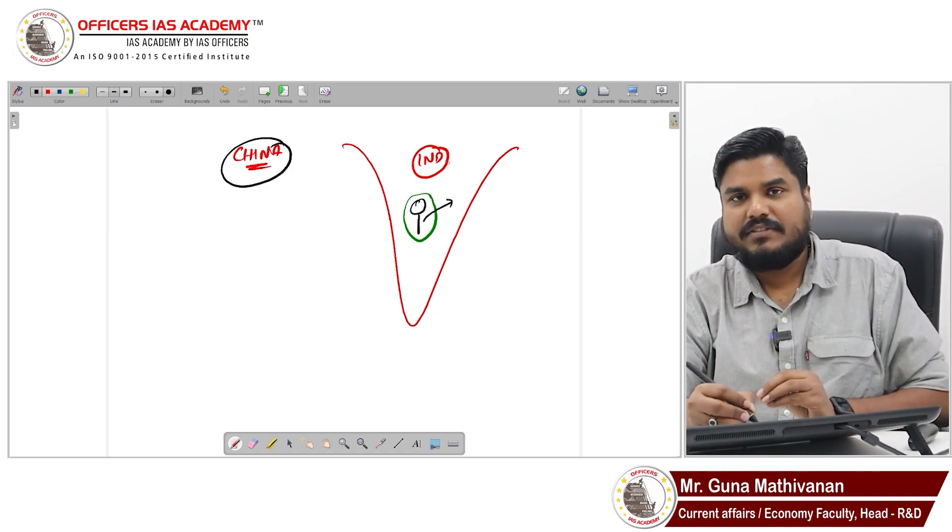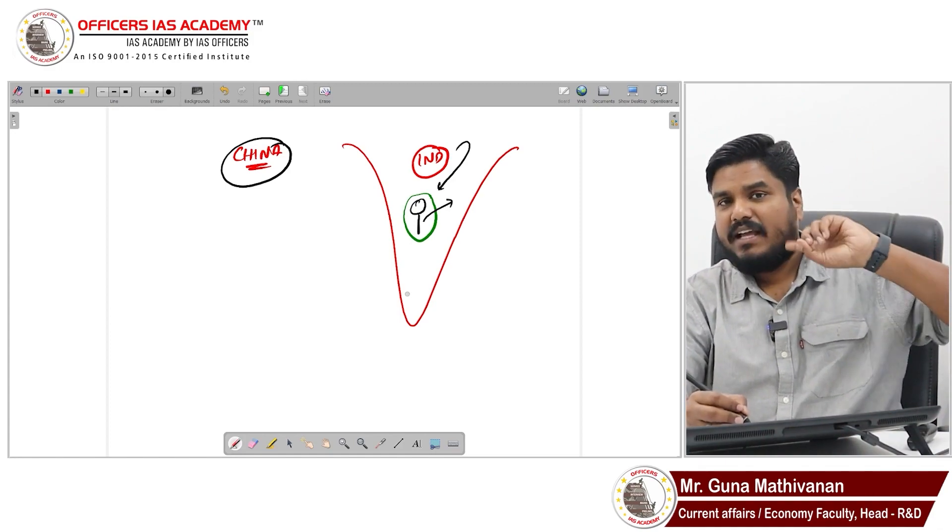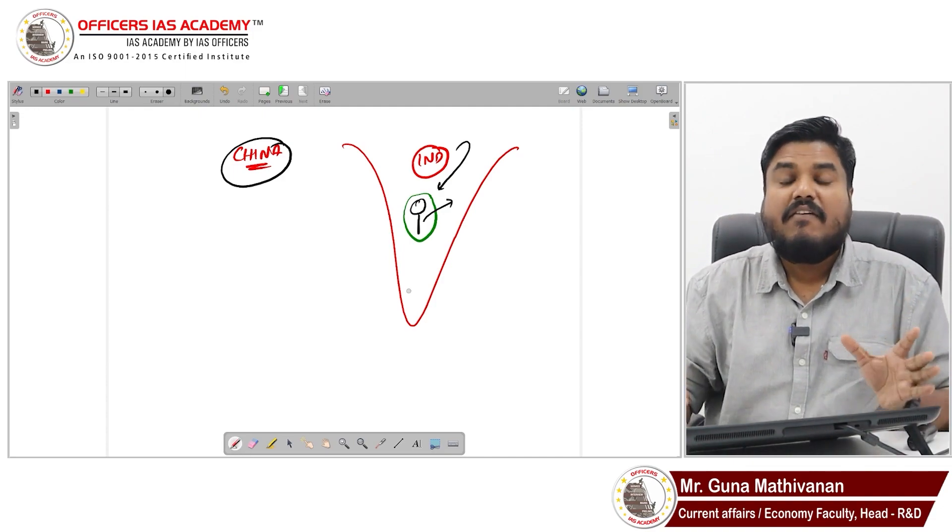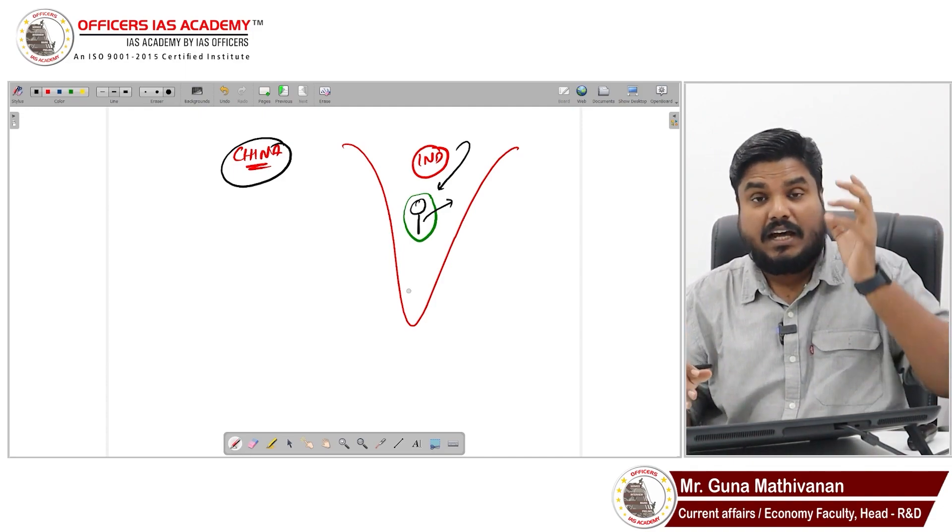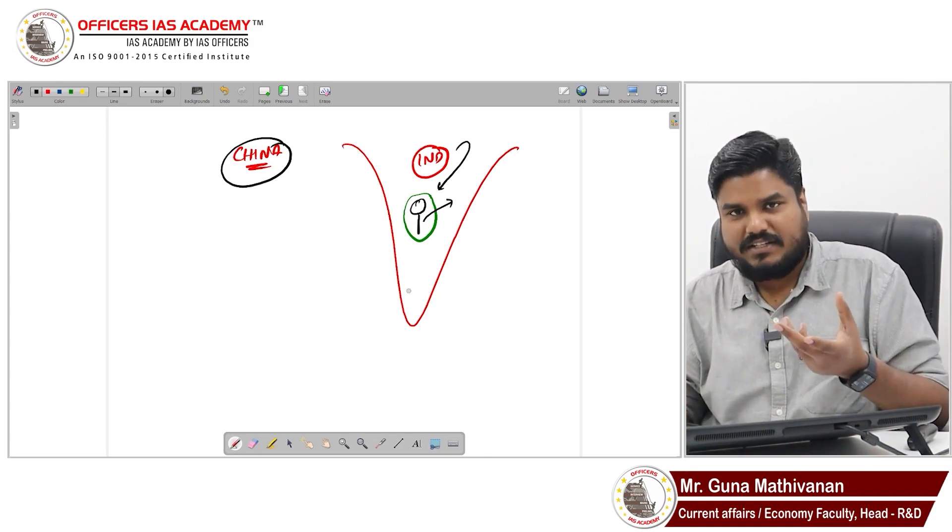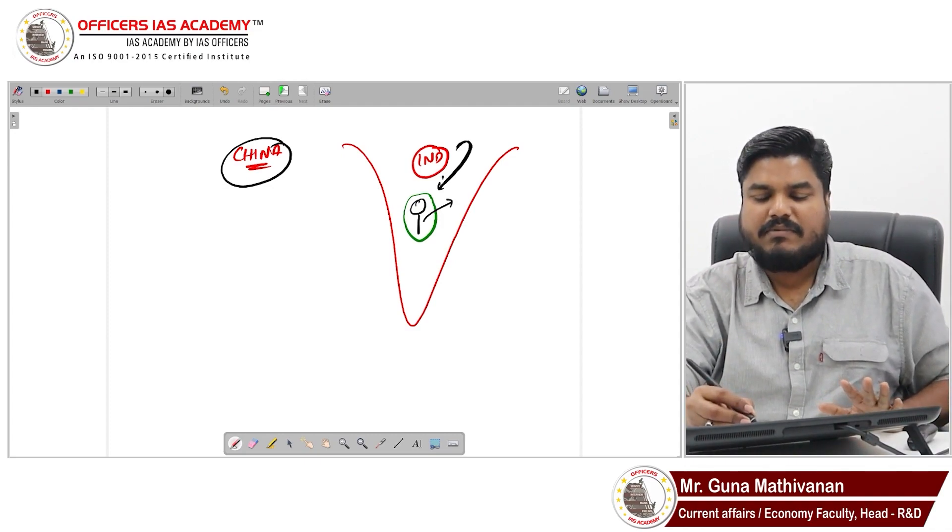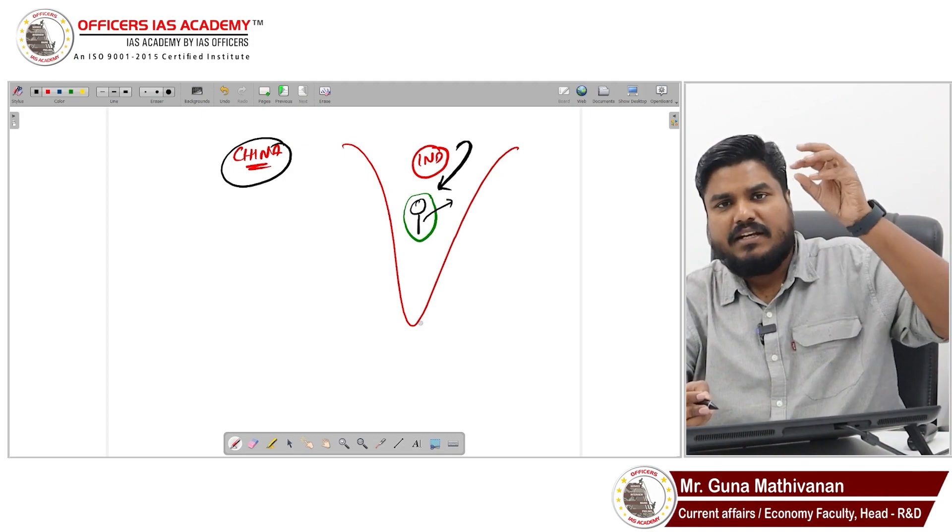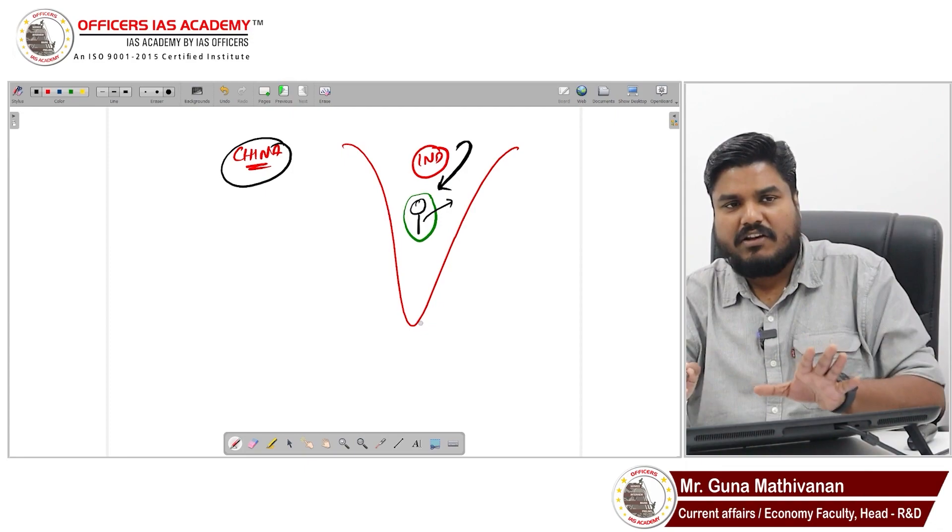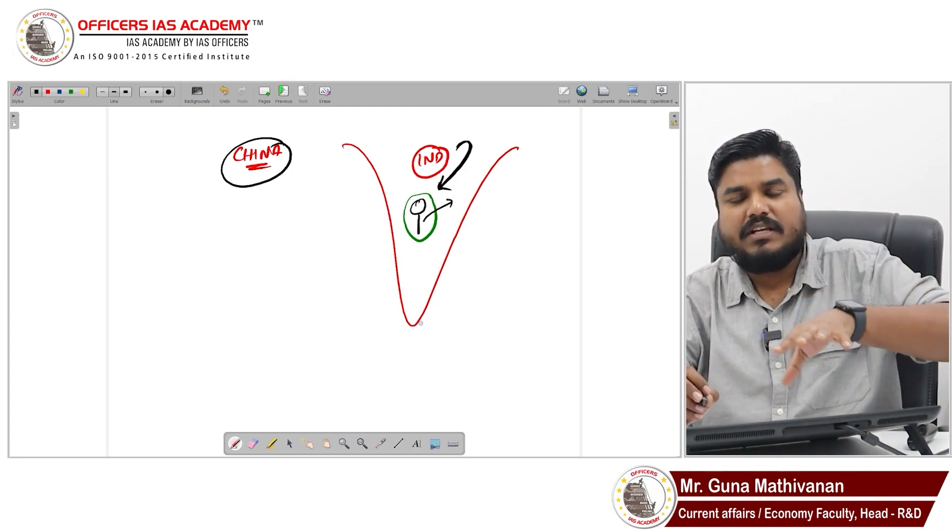Indian government found it. Now Indian government wants to send that person back. Is that permitted? The Vienna Convention Article 9 itself says that in such situations, without giving any explanation, Indian government can simply declare that diplomat as persona non grata.